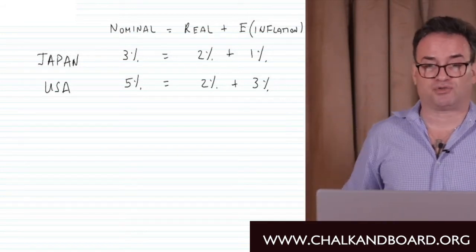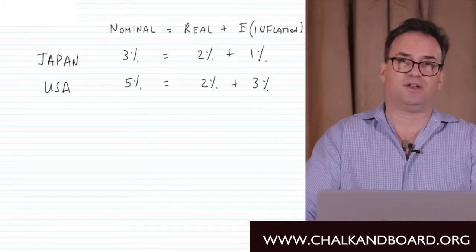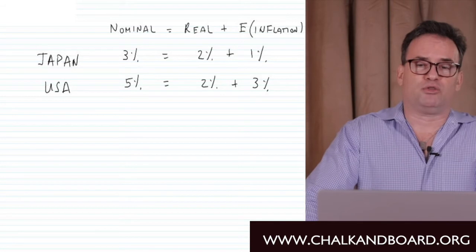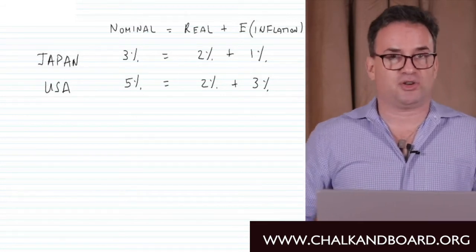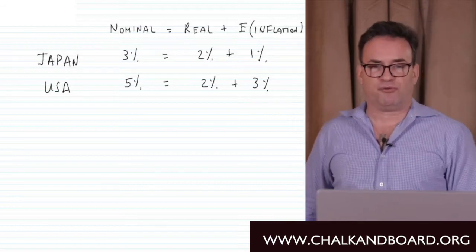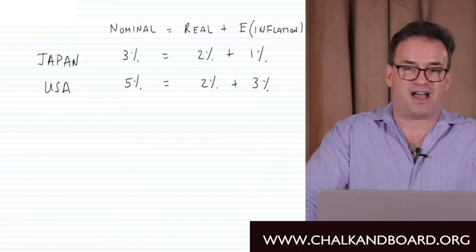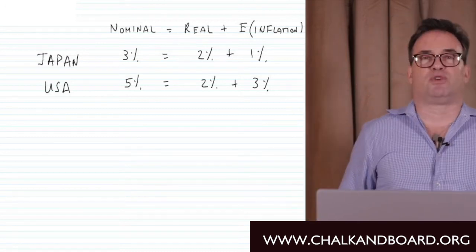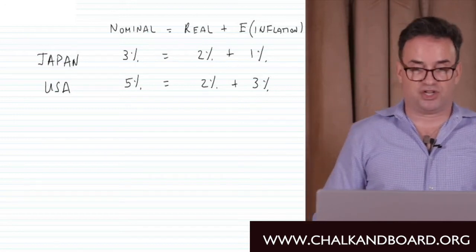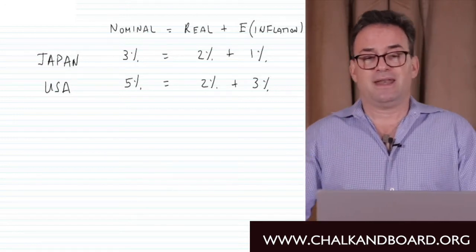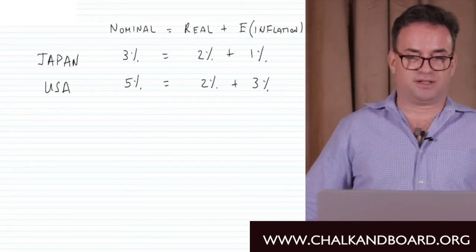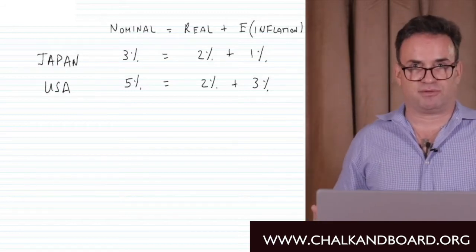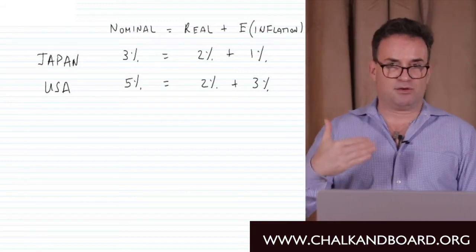Coming back to the Japan and U.S. example: since both are well-integrated markets where capital flows freely, we see that real rates are the same — 2% in both Japan and the United States. However, the nominal rates are different: Japan's nominal interest rate is 3% and the U.S. is 5%, due to inflation differentials of 1% in Japan and 3% in the U.S. Real rates are the same; any differences in nominal rates are due to inflation differentials alone.